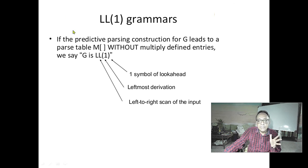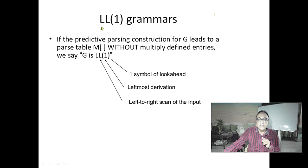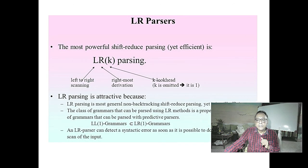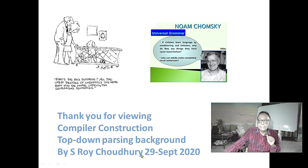To summarize: LL1 is left-to-right, leftmost derivation with one look-ahead — that is top-down parsing. When you see LL, it is top-down; when you see LR, that is bottom-up. The first L means scanning from left; R means deriving from the right, which is bottom-up. LR parsing is the most powerful parsing technique known today. LR1 is definitely more powerful than LL1. Thank you very much.